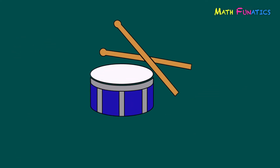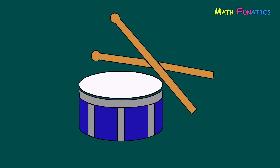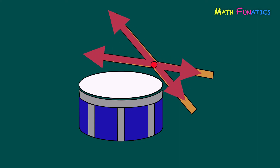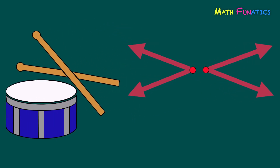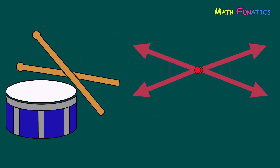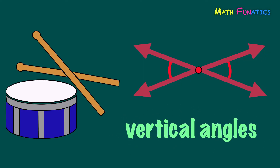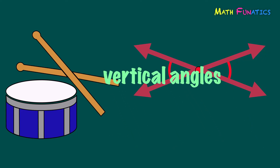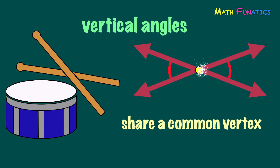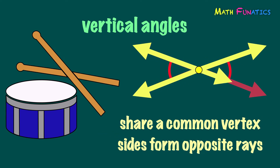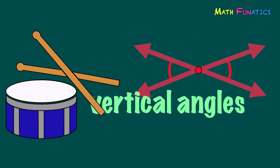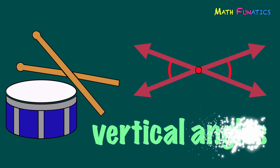The next illustration shows a drum with a pair of drumsticks. The angles are found on the opposite directions of the overlapping pair of drumsticks. These two angles are called vertical angles. Observe that vertical angles share a common vertex and their sides form opposite rays.